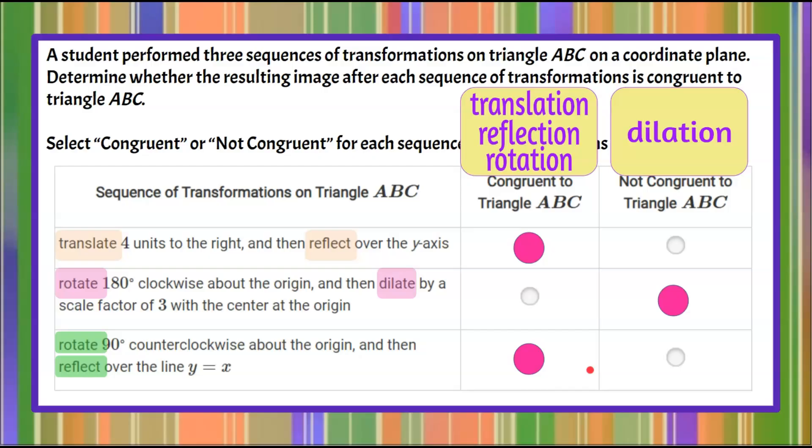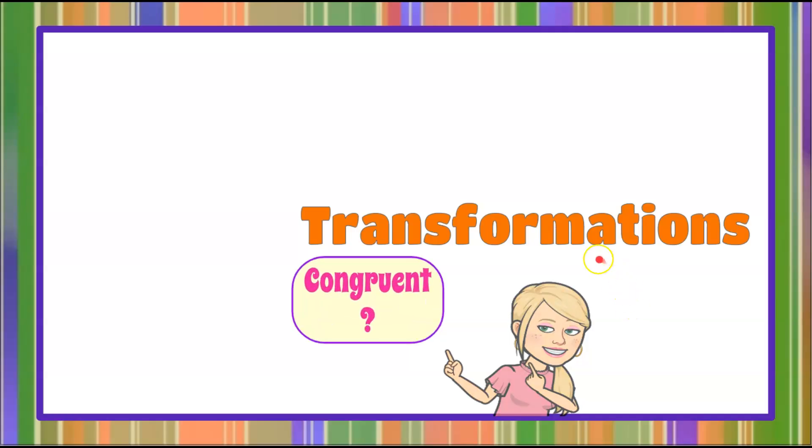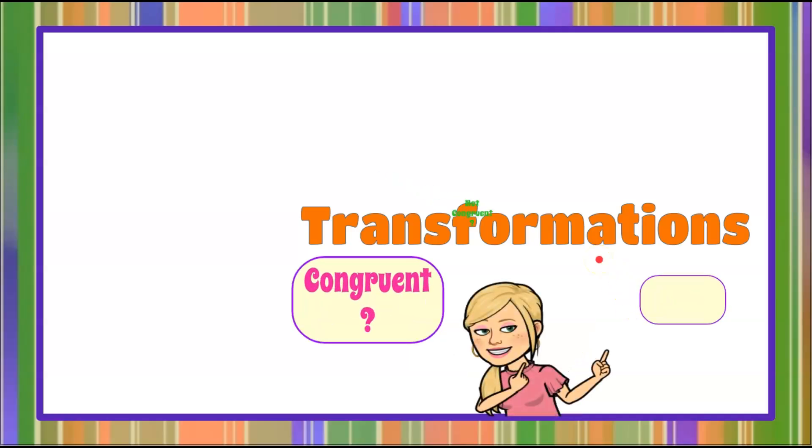So there you have it. When you translate, reflect, or rotate, you get a congruent image. And when you dilate, your image will be similar, but not congruent. And that is how we determine congruent or not congruent when we're talking about transformations.